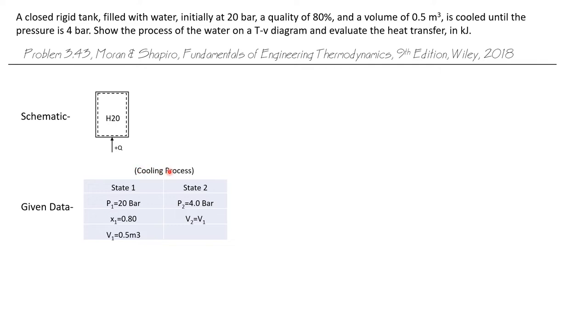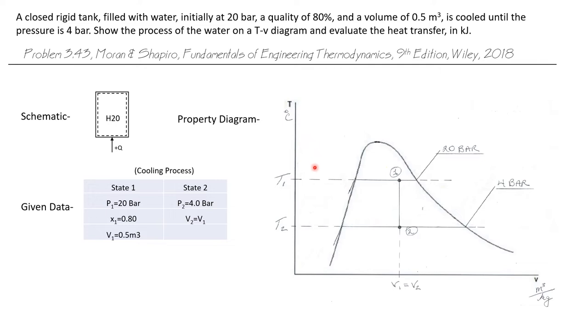The system undergoes a cooling process from state 1 to state 2. State 1 is given as a pressure of 20 bar. It has a quality of 80%, so we know it's starting out as a saturated mixture. And the volume of the tank, which is a constant, is 0.5 cubic meters. Now state 2, the pressure is 4 bar. So the pressure has been lowered. But the volume of state 2 is equal to the volume at state 1. The volume doesn't change.